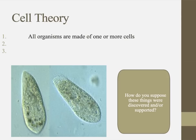We're going to start out by listing the three principles or parts of the cell theory. The first one is that all organisms are made of one or more cells. So we have things that are unicellular, like bacteria, and things that are multicellular, like fungi, animals, plants, etc. But all living things are made out of at least one cell.